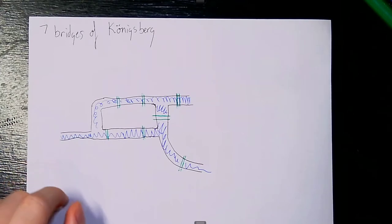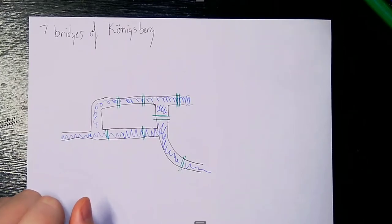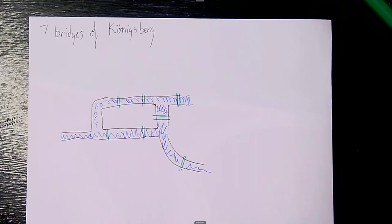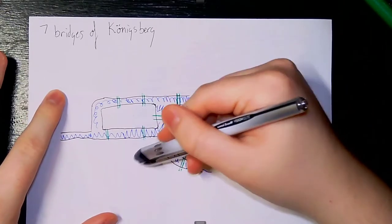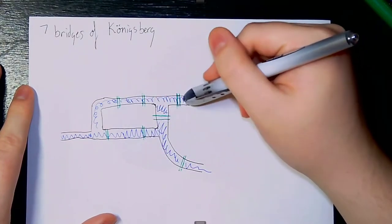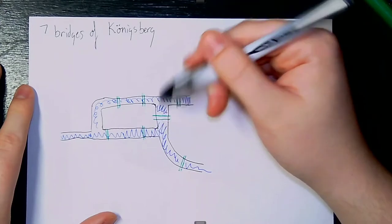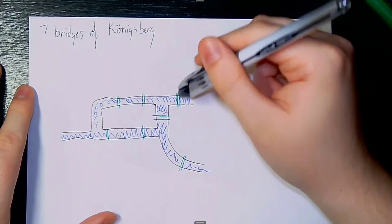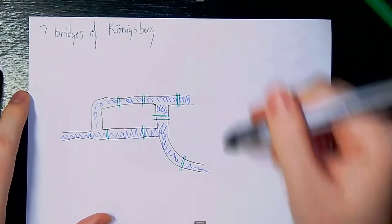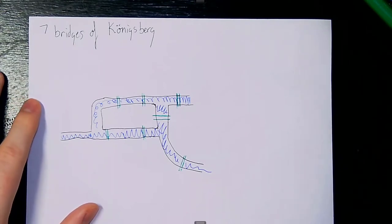Back in Königsberg, Prussia, sometime in the 1700s — I'll have to double check that — the city kind of looked like this. There are four land masses and seven bridges connecting those land masses in various ways. Those bridges cross a river, which I tried to do in blue, and the bridges I tried to do in green. What people tried to do — because they didn't really have any entertainment back then, certainly no Netflix — was to cross all of these bridges in one route without taking any bridge twice.